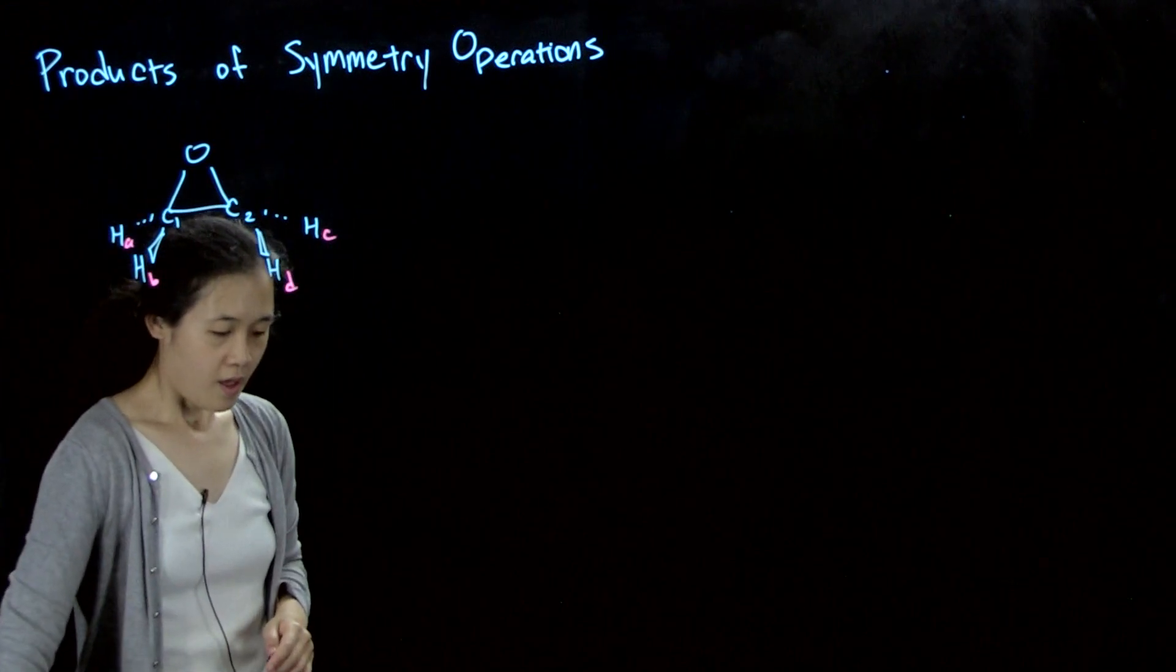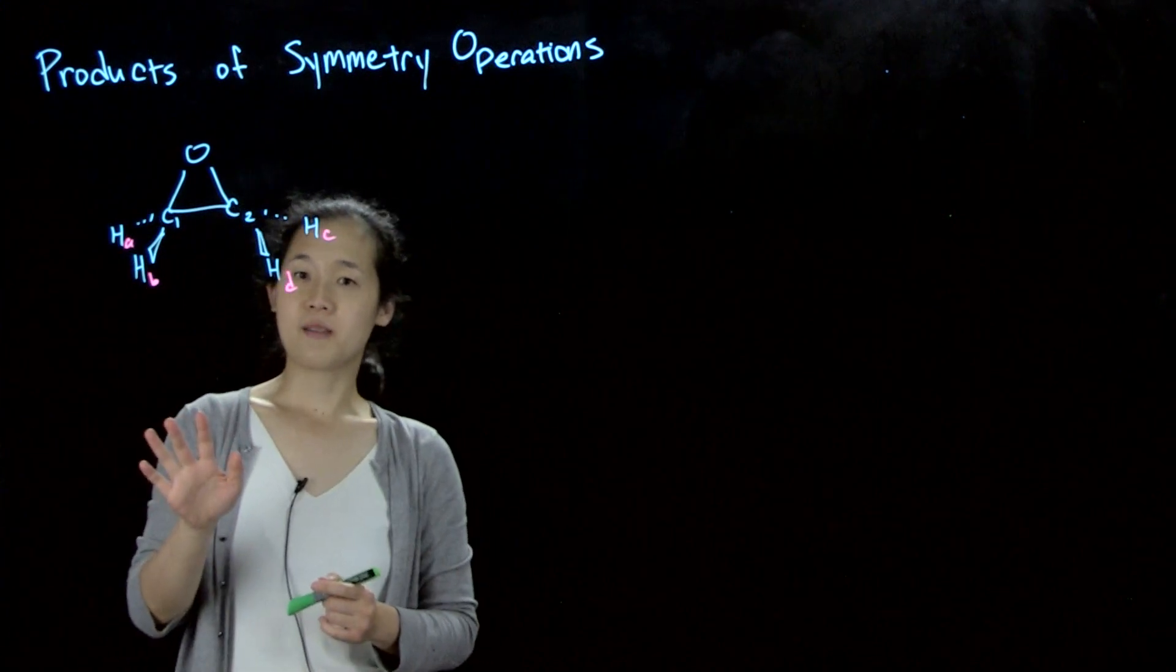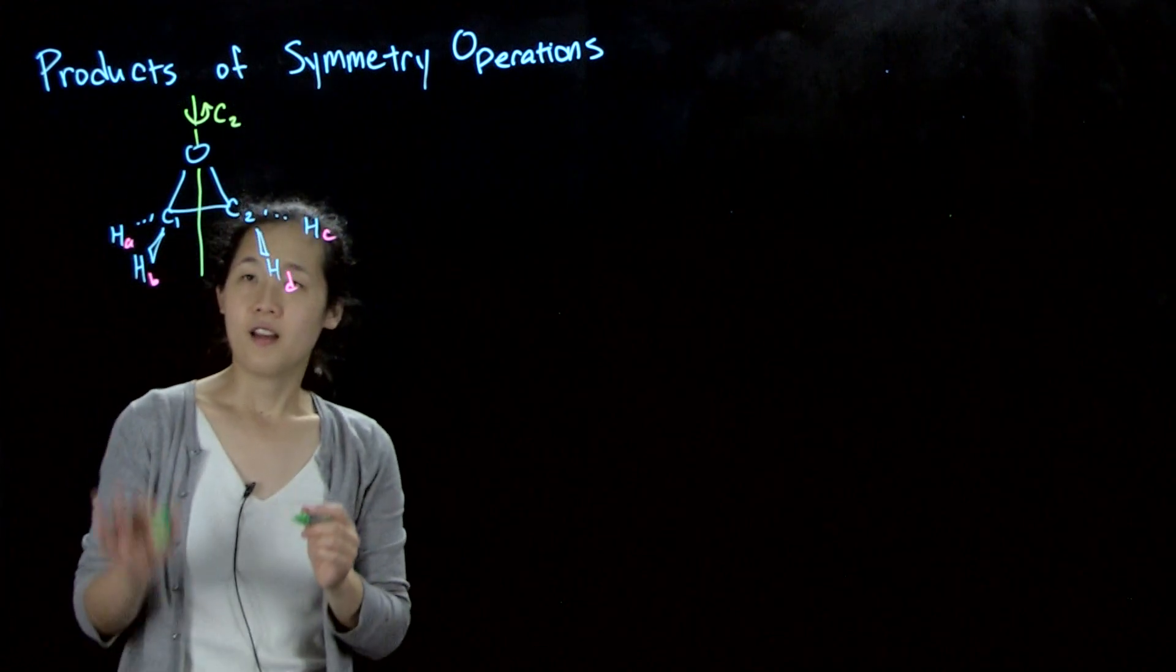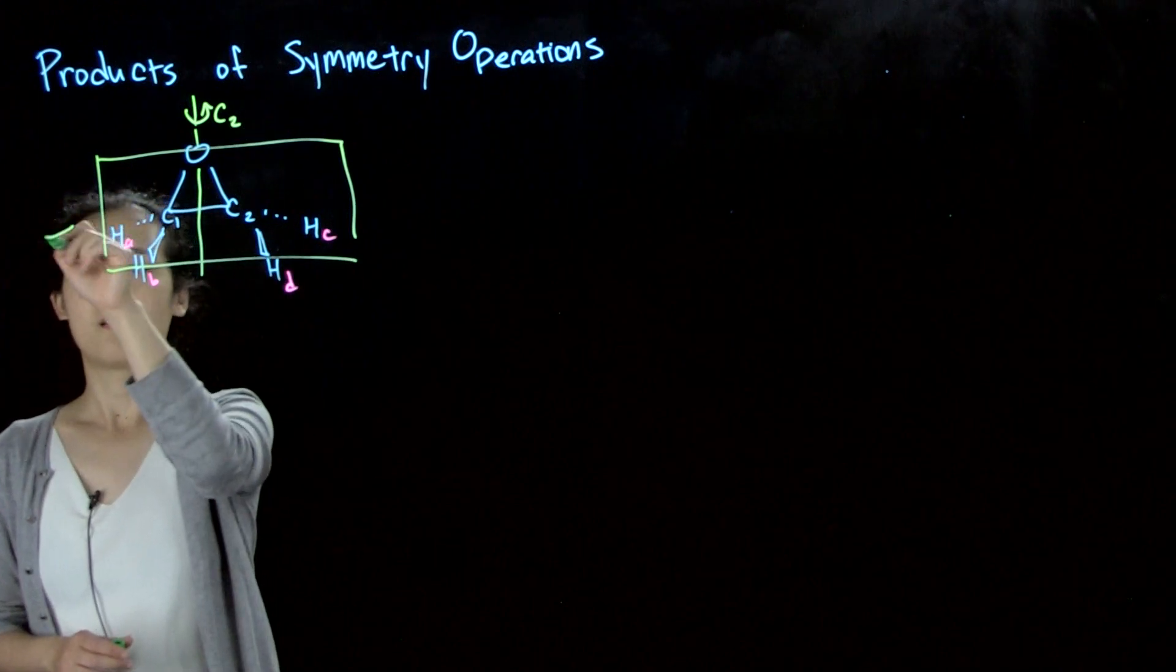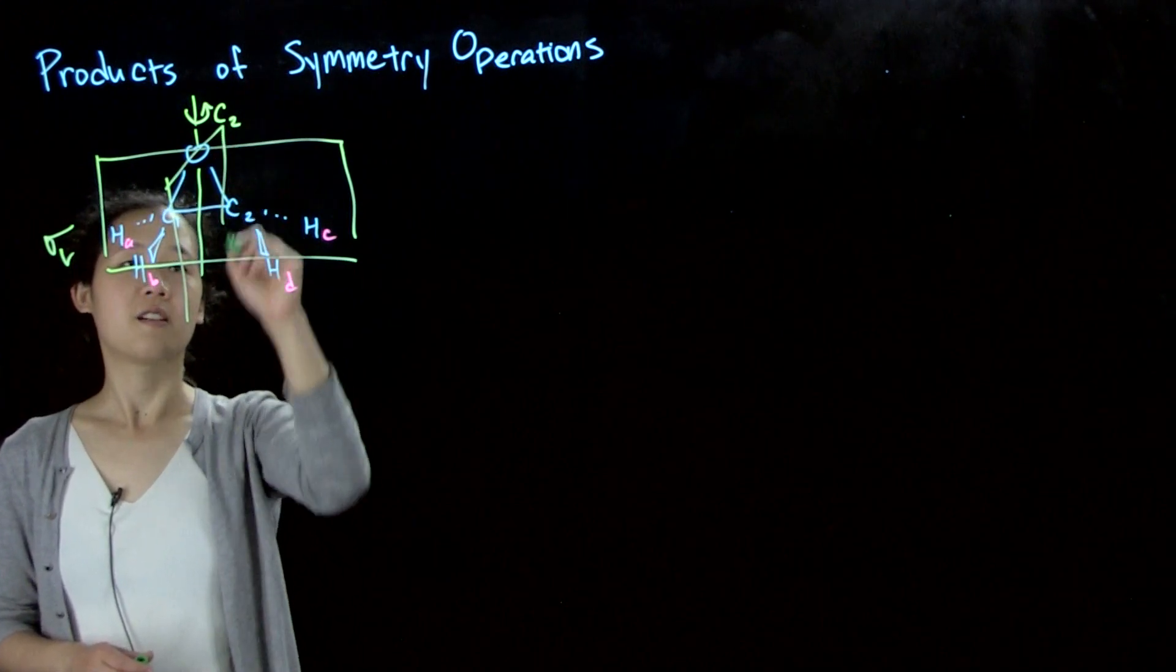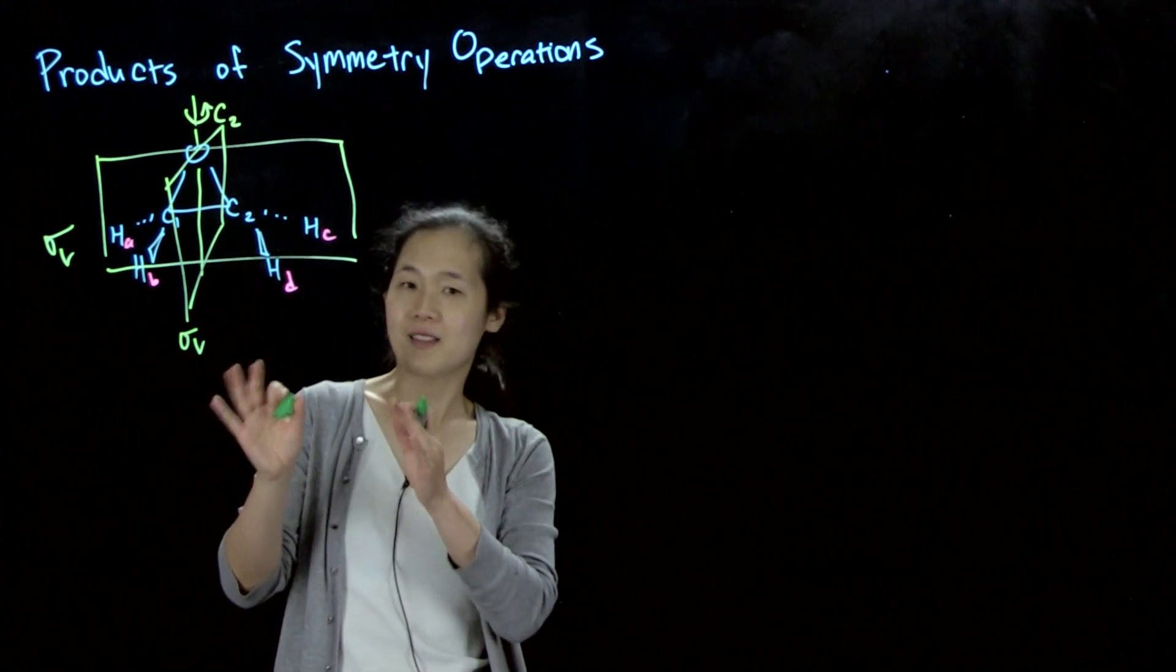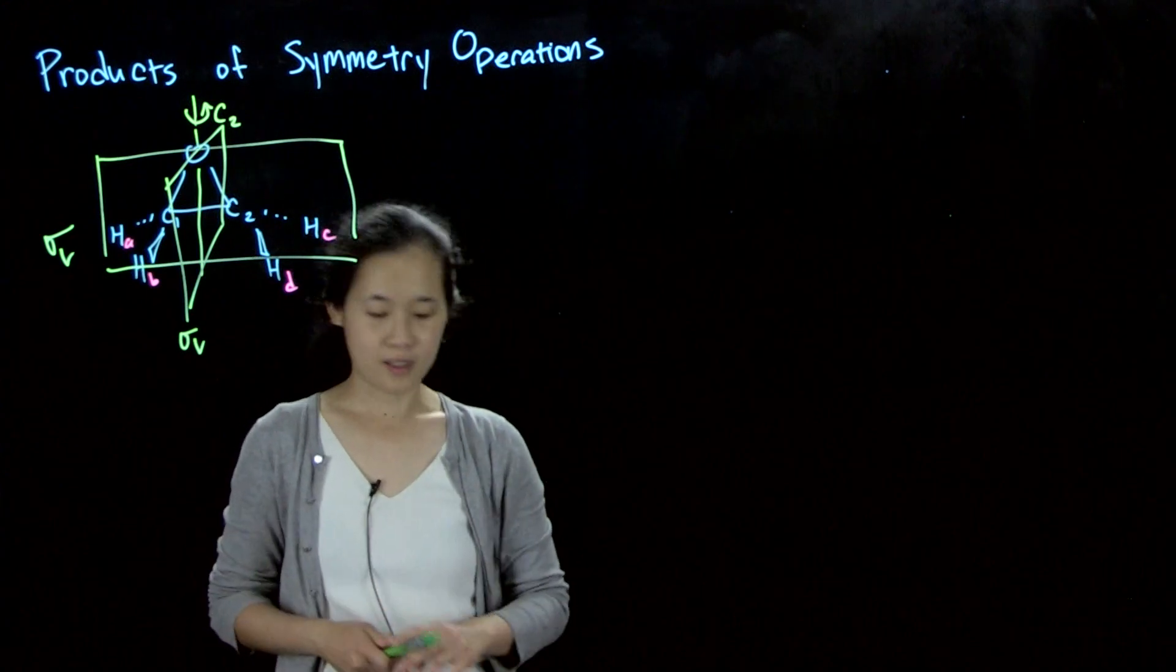So this molecule has a few different symmetry operations. One is the C2 down this oxygen. And then there's a sigma v in the plane of the board, as well as a sigma v going into the board here. So this actually has the same symmetry operations as water. You can see it has these three symmetry operations, as well as the identity operation, of course.